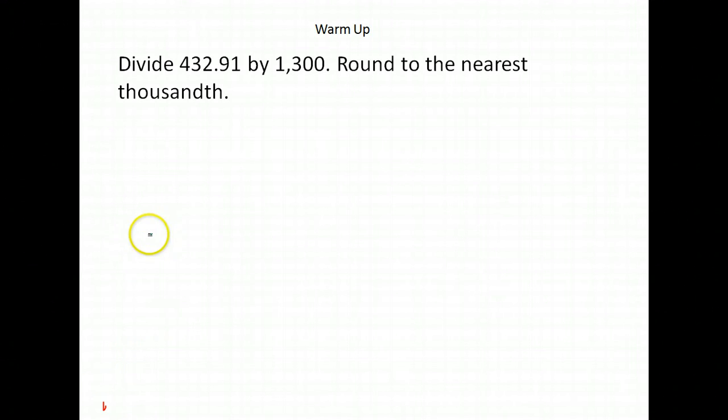Alright, so here is our first warm-up question. It asks us to divide 432.91 by 1,300 and round to the nearest thousandth.